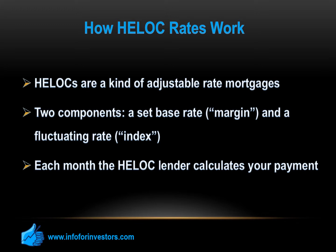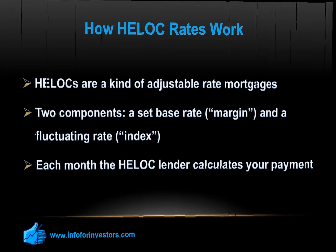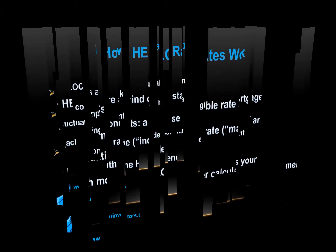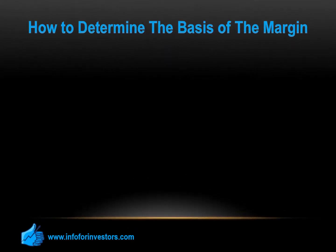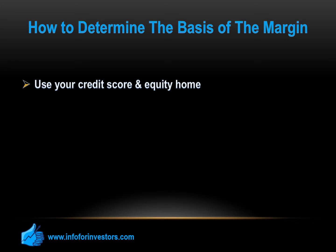Once you have your HELOC lender, they will run a single report from all three major credit bureaus — namely Equifax, TransUnion, and Experian. They will merge your credit history extracted from the three sources. This report will incorporate all your past credit history and your credit scores from each bureau.